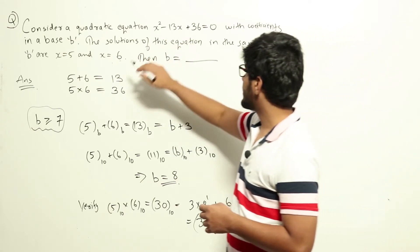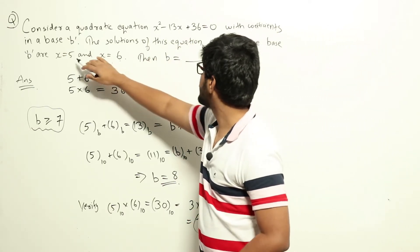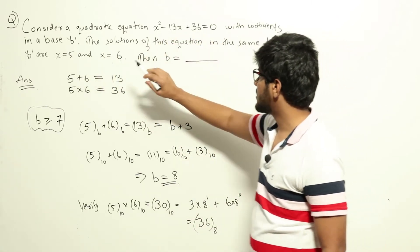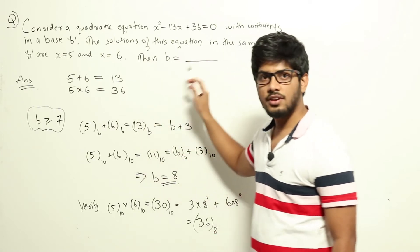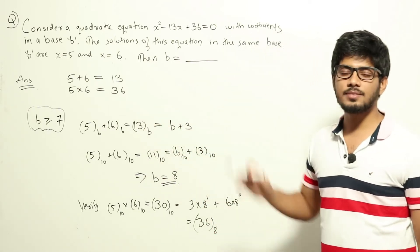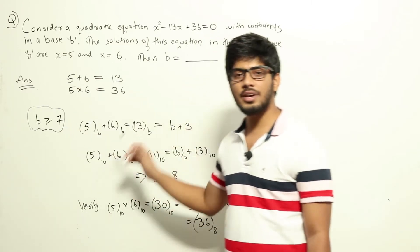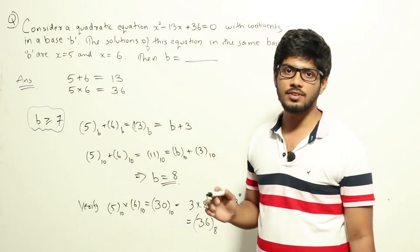So let's look at the digits here which we have: 6, 5, 13, and 36. If you look at the numbers, the largest digit is 6. So if 6 is a valid digit in this base B number system, then the base should be greater than or equal to 7. If the base was 6, then we could only use digits from 0 to 5.